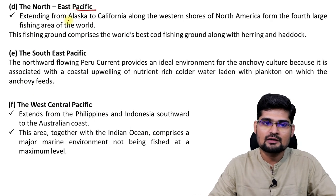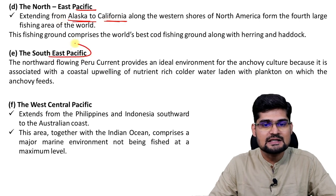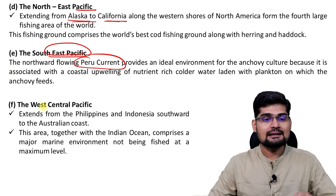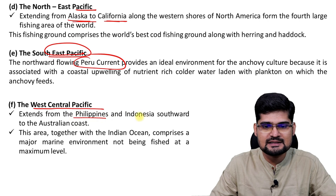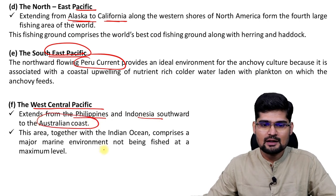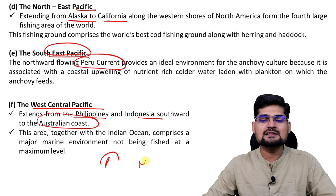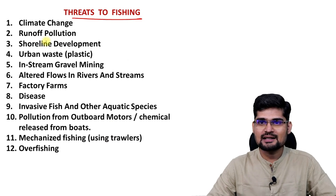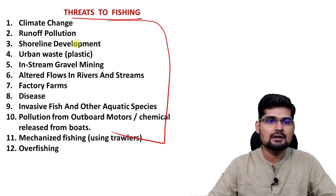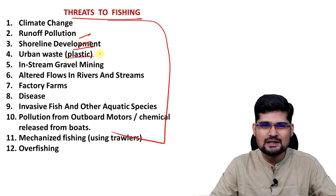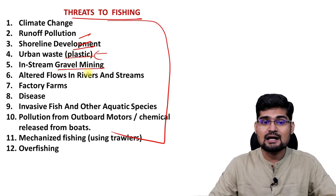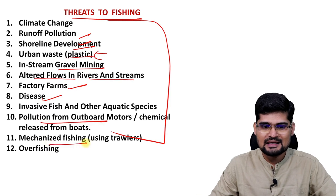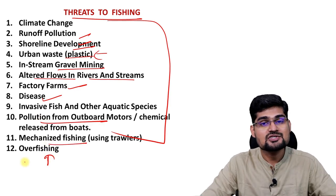More fishing regions include: the North East Pacific, extending from Alaska to California; South East Pacific, where you have the Peru Current, also discussed in Oceanography; and the Western Central Pacific, where you have Philippines and Indonesia extending southward to the Australian coast. Map these areas on the world map. Threats to fishing activity include: climate change, runoff, shoreline development, urban waste, plastic waste, in-stream gravel mining, altered flows of rivers and streams, factory farms, diseases, pollution, mechanized fishing, and overfishing.